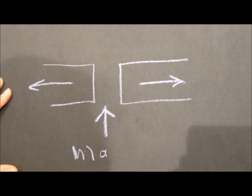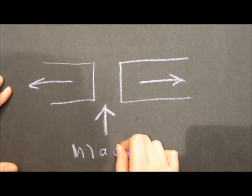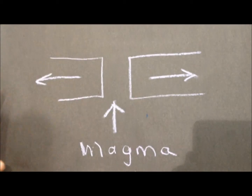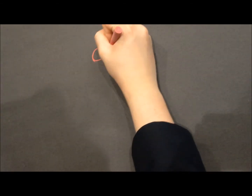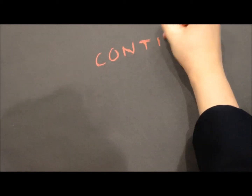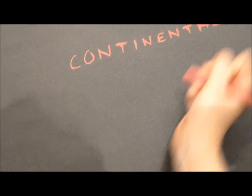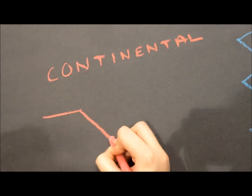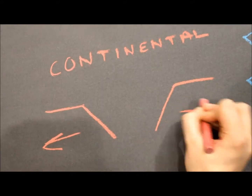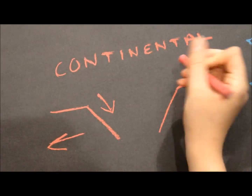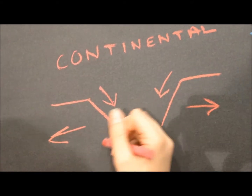This causes mainly volcanoes and sometimes earthquakes. At continental or on-land divergent plate boundaries, the middle material falls in to form a rift valley because of its weight.